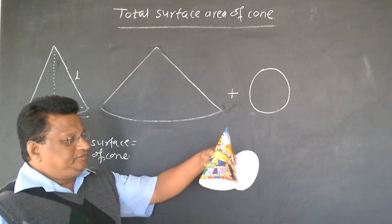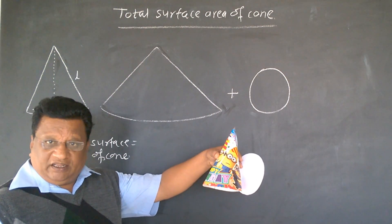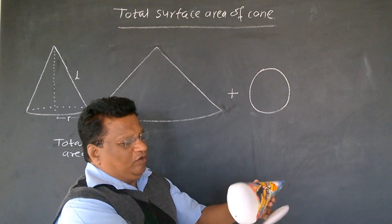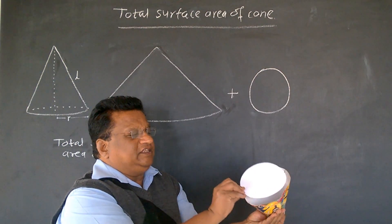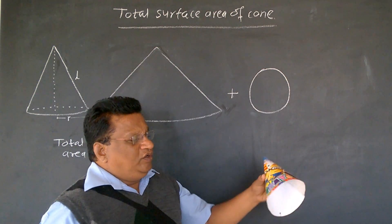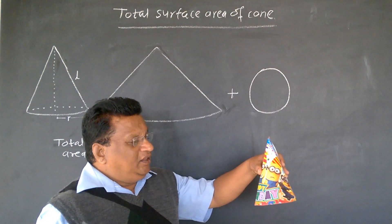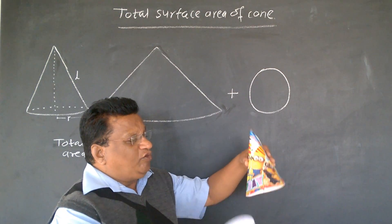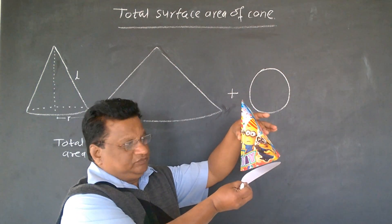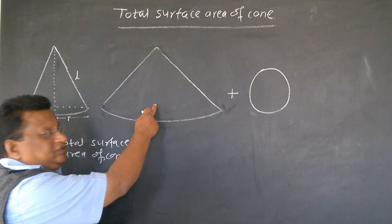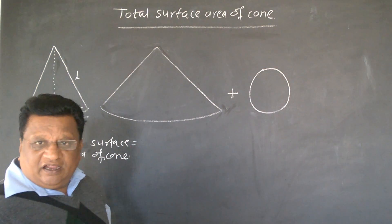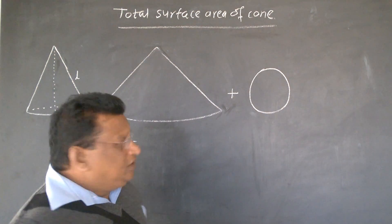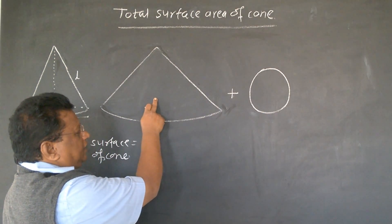This is the cone. In ice cream parlor, you have seen that there is such a cone, and at the bottom, there is a lid like this. So, total surface area means what? The paper or metal sheet required to make this cone. This part is known as curved surface area, and this is the circular disc.